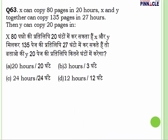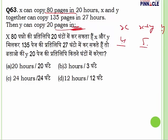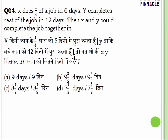Question number 63: X can copy 80 pages in 20 hours — that is 4 pages per hour. X and Y together can copy 135 pages in 27 hours — that is 5 pages per hour. So Y copies 1 page per hour. To copy 20 pages, Y will take 20 hours. Answer is 20 hours.